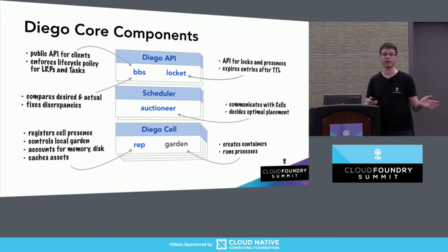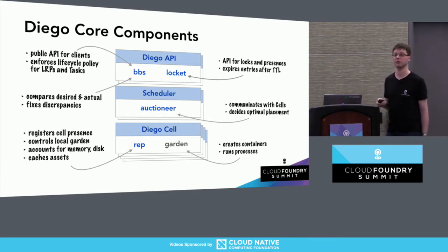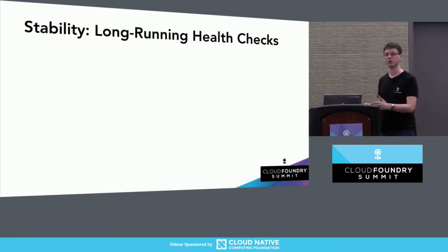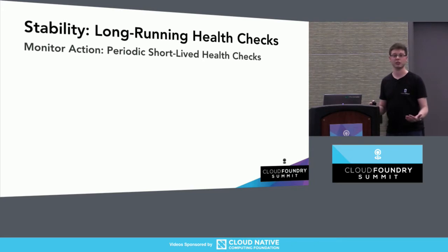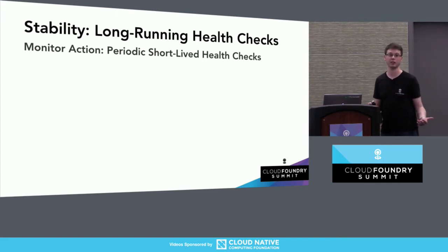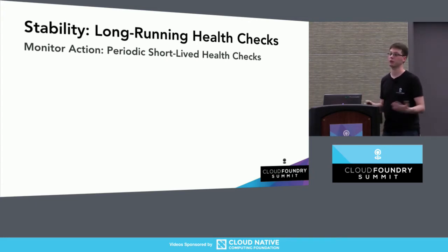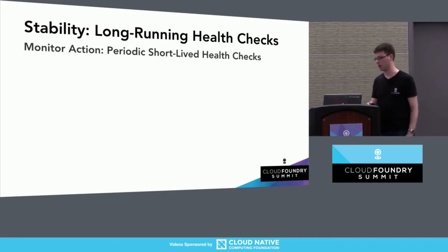Now I'd like to change gears and give you some updates from the past year. One is about how Diego cells perform active health checking of application instances. Our previous way to express this through the BBS API was through something called the monitor action — a fairly generic action performed periodically to assess the health of an individual app instance. This could involve running a binary that does a TCP port check or an HTTP request against the application, or basically any other kind of process. Through Cloud Controller, we've only really expressed these network-based health checks.